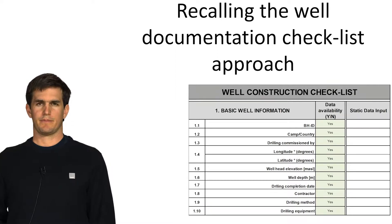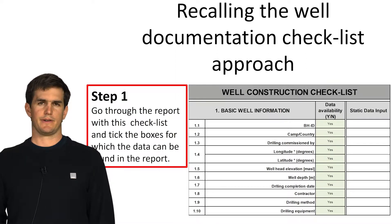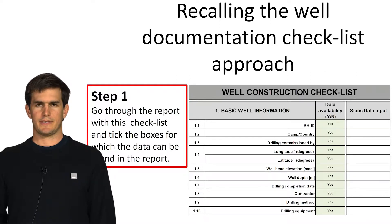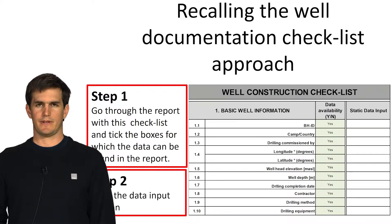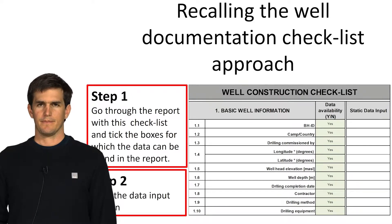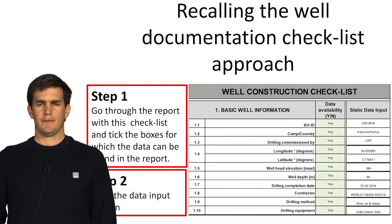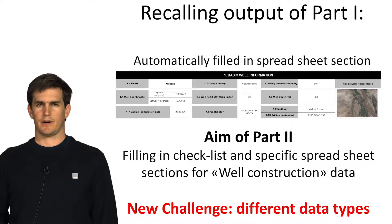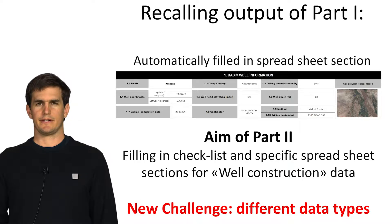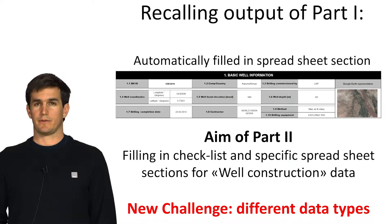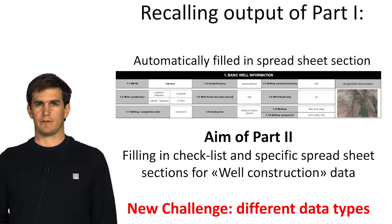The first step is to tick the boxes where the data is available in the borehole completion report. The second step is to input that data in the dedicated column. In this second part, with well construction information, there is some specific data that cannot be inputted in the checklist and will have to be introduced in a specific spreadsheet that we will look at next.